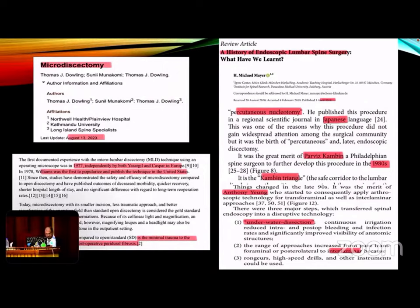In literature, we find that microscopic lumbar spine intervention was introduced into practice in 1977 by Yasargil and Caspar, then popularized by Williams. On the other hand, percutaneous nucleotomy was introduced by Hijikata in 1975, then Kambin developed percutaneous nucleotomy in 1986. Young then started using arthroscopic technology with an irrigation system in spine intervention in the late 1990s, which is the real start of spine endoscopy.